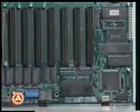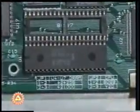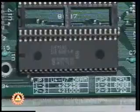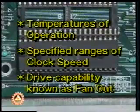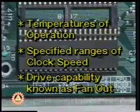As a sequential system, its behavior may be explained in terms of discrete operational steps — that is, it performs several steps in a defined sequence. As a large-scale integrated circuit, the microprocessor is a compact and economical solution to a large number of digital functions. It comes in standard packages with limited number of pins and specified power supplies. It has limits on temperatures of operation, specified ranges of clock speed, and drive capability known as fan out.